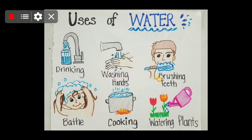Starting with the chapter, we have several uses of water. From the morning itself, when we brush our teeth, we start using water — for washing hands, for drinking, we require 2–4 litres of water. And for bathing, for cooking, for watering plants, for washing clothes, for washing utensils — for so many purposes, we need water.